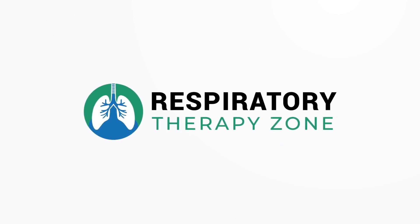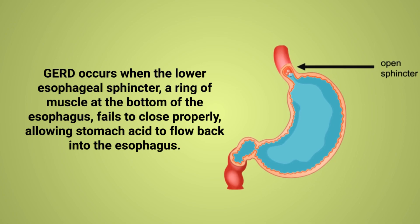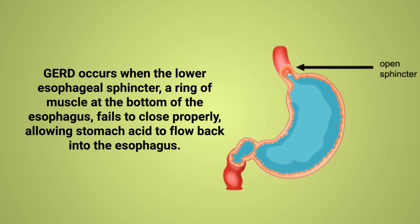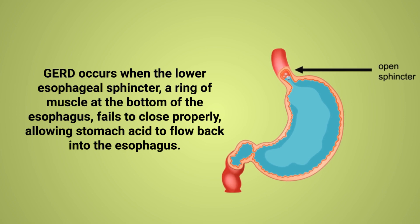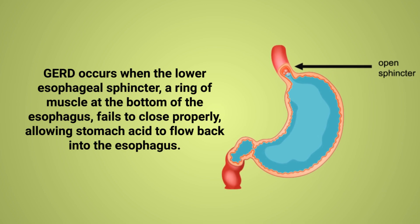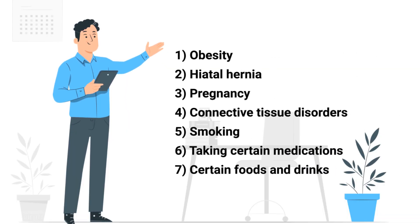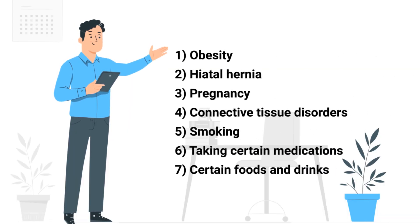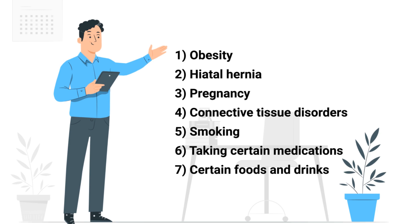First, let's talk about the causes. GERD occurs when the lower esophageal sphincter, which is a ring of muscle at the bottom of the esophagus, fails to close properly, allowing stomach acid to flow back into the esophagus. This can be caused by a variety of factors including obesity, hiatal hernia, pregnancy, connective tissue disorders, smoking, taking certain medications, and the consumption of certain foods and drinks.